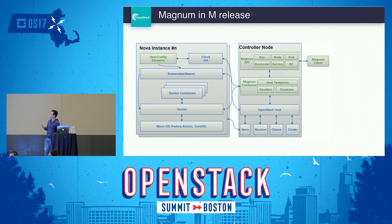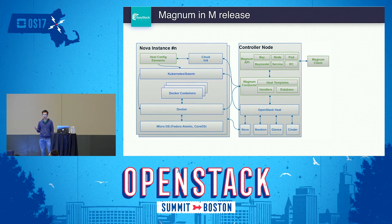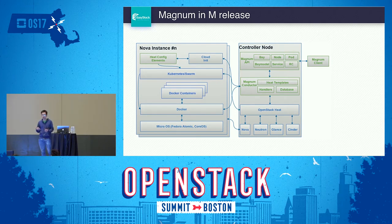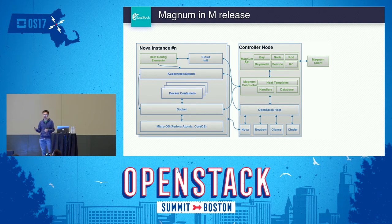This is Magnum in the Mitaka release. We can see that using Magnum, we can create a Bay model and create a Bay, and the Magnum conductor will call Heat. Heat will call the different OpenStack components such as Nova, Neutron, and different resources. On top of the Bay, we can create pods, services, and replication controllers.